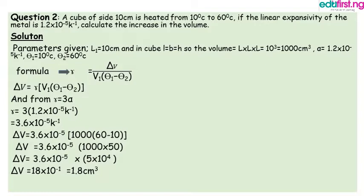Using the formula gamma equals change in V over V1 times (theta2 minus theta1), we are looking for the change in V, so we make it the subject. Also, gamma equals 3 times alpha. So gamma equals 3 multiplied by 1.2 times 10 to the power minus 5 per Kelvin, which equals 3.6 times 10 to the power minus 5 per Kelvin.